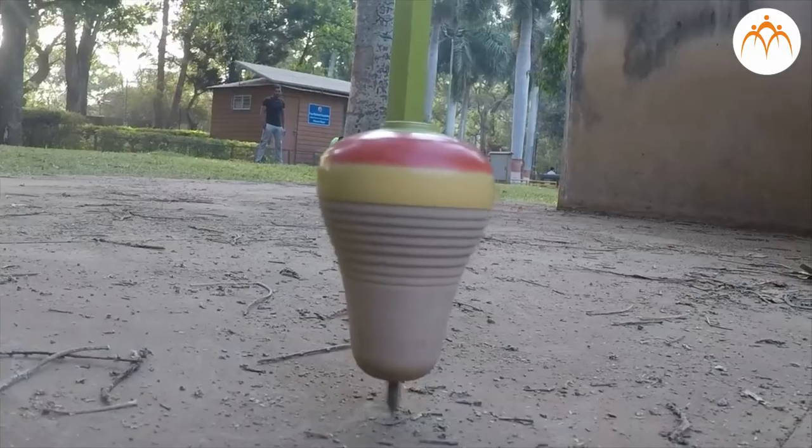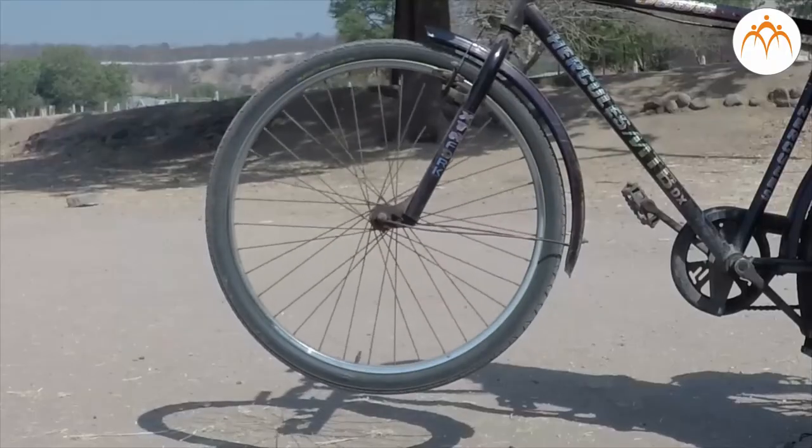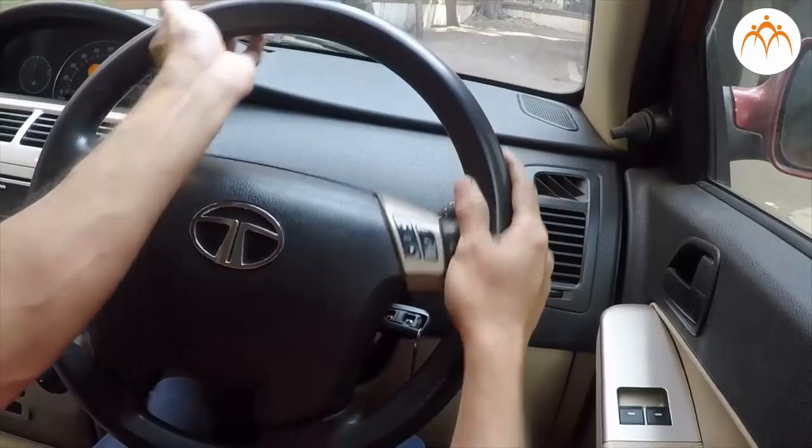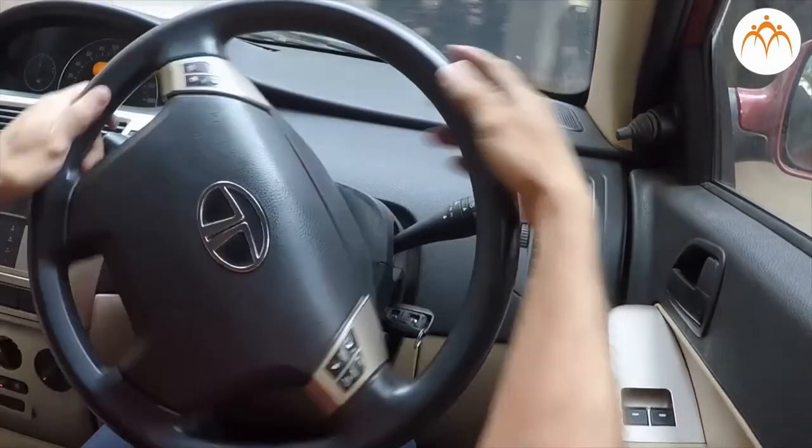Rotational motion is often periodic. A top used for playing, the motion of a wheel about its axis, and that of a steering wheel are examples of rotatory motion.